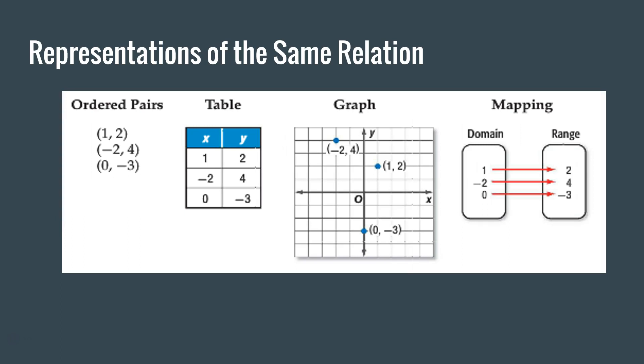There are many ways to represent the same relation. As you can see here, we have the ordered pairs: 1, 2, negative 2, 4, 0, negative 3. We can write that as a table, and we can also graph that. As you can see, it's negative 2, 4, and 1, 2, 0, negative 3. And that's it being shown as a graph. We can also show it by mapping, which is the first one that we looked at before. 1 to 2, negative 2 to 4, 0 to negative 3. So these are the four different representations of the same relation.